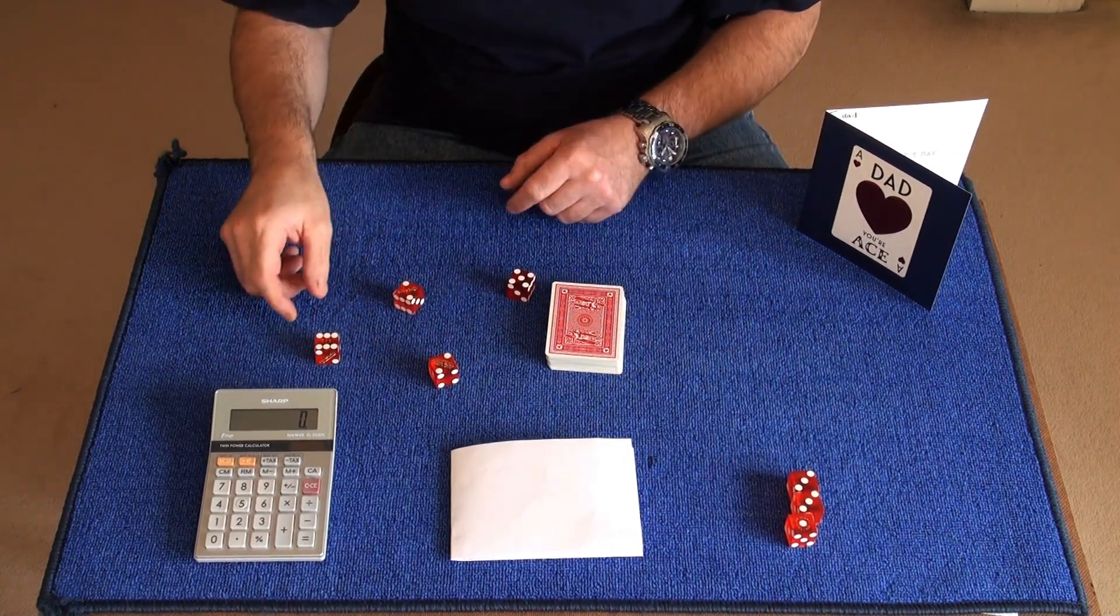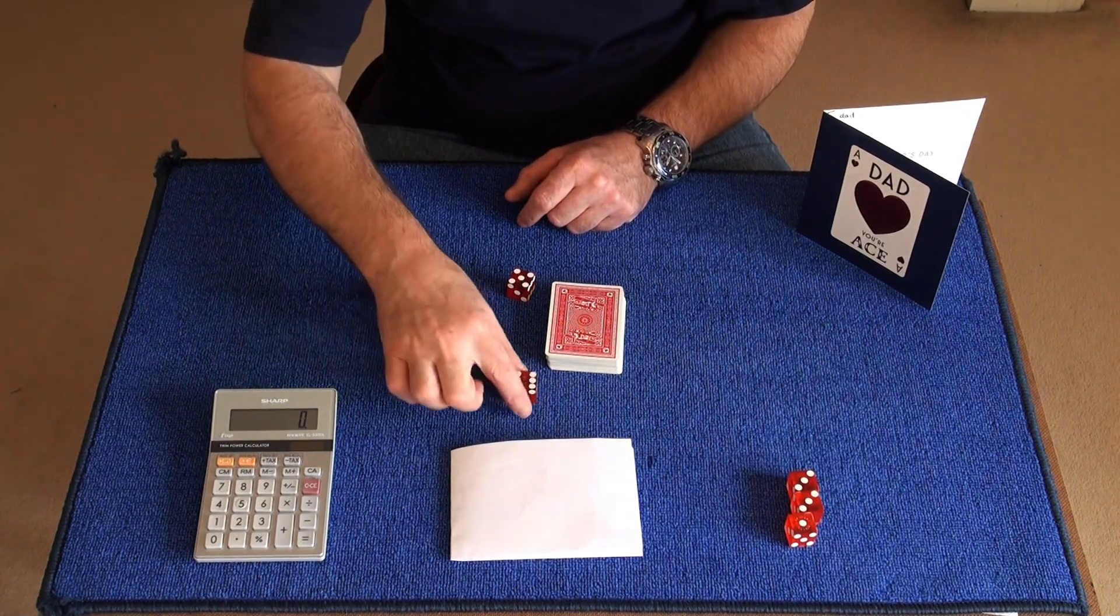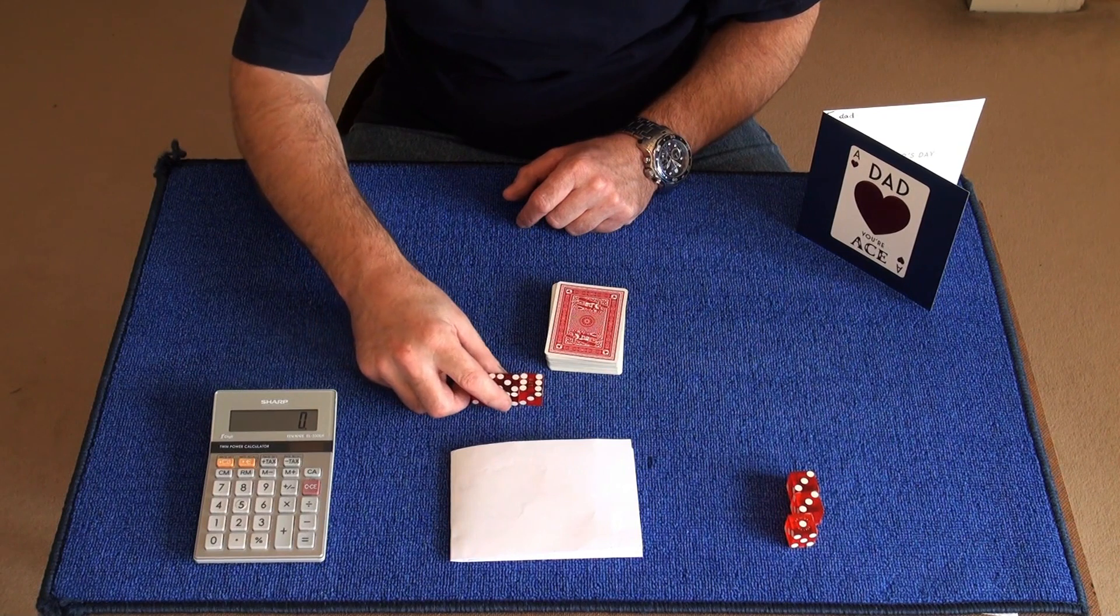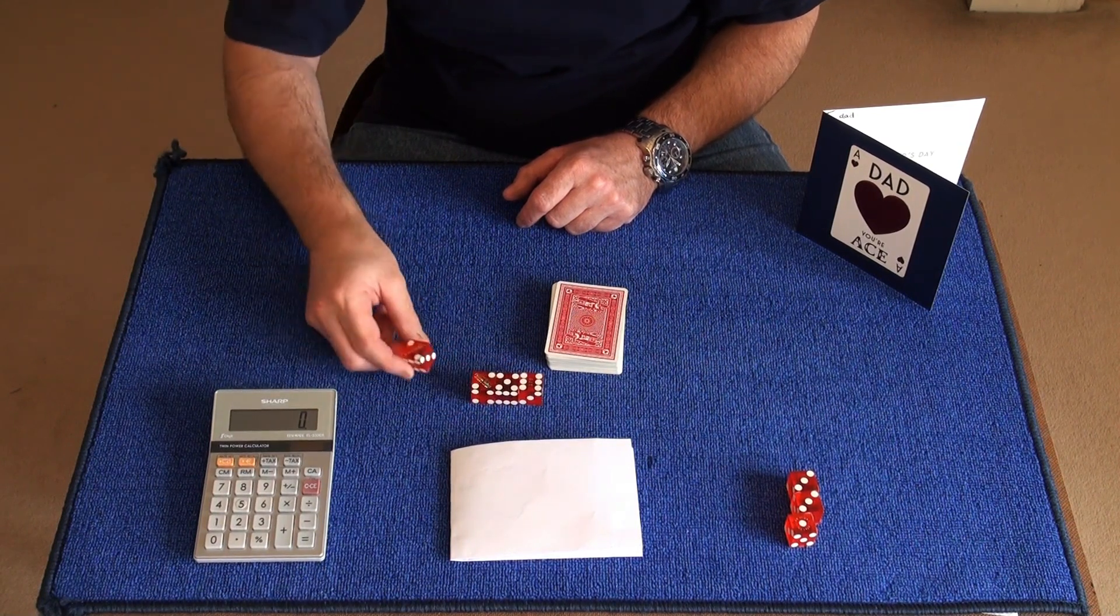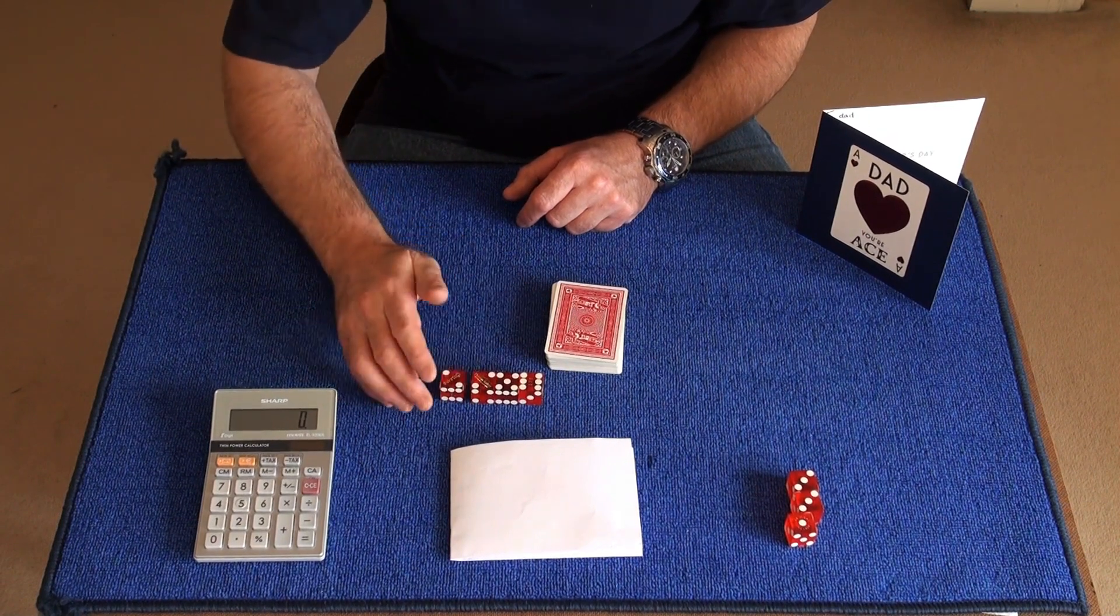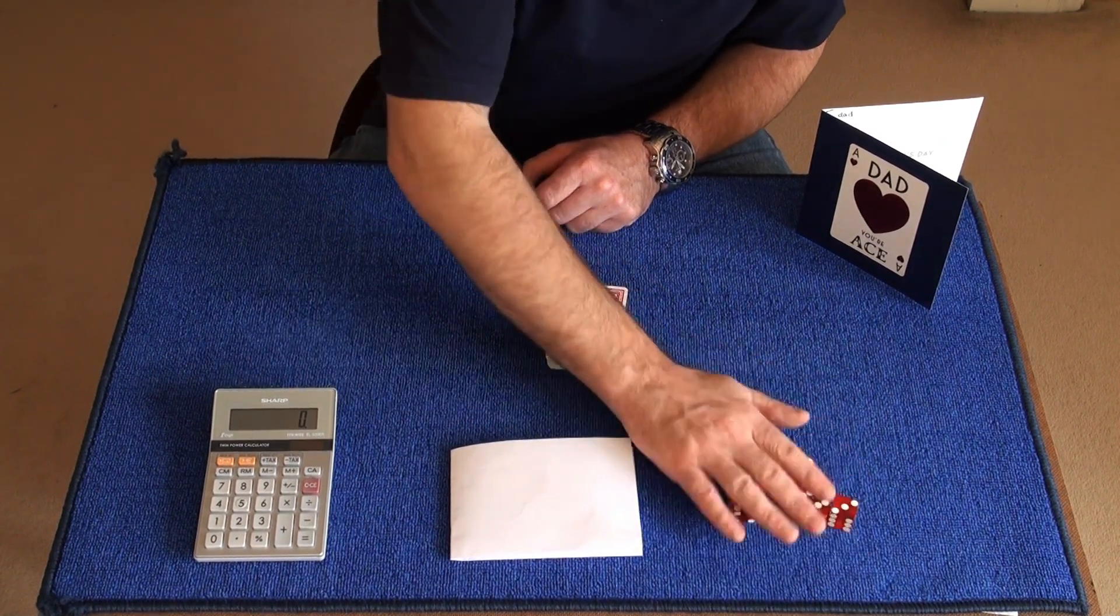And you'd ask them to add up the total number. So we've got a six and a five which is 11, a two which is 13, and another two which is 15. Now while your back's still turned, you'd ask them to mix these dice up with the others, so you don't know what number they've chosen.